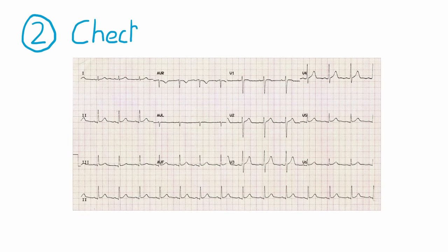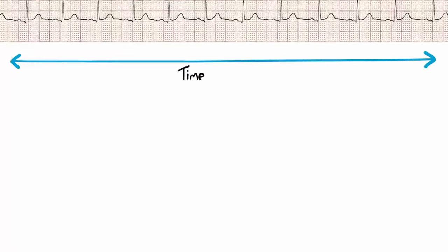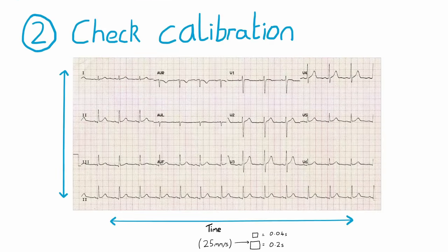Step two is checking calibration. This means checking the paper speed, which should be 25 millimeters per second. This speed will mean that one small square is equivalent to 0.04 seconds and one large square is 0.2 seconds. Also check the calibration of amplitude, which should be 10 millimeters per millivolt.